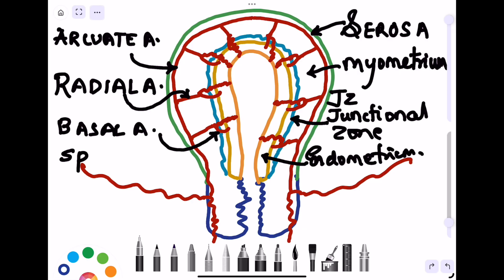A small twig comes from the radial artery, which is known as a basal artery, supplying the basal endometrium. Another branch comes from that, which is known as the spiral artery, that supplies the superficial part of the endometrium.